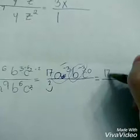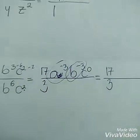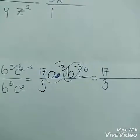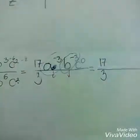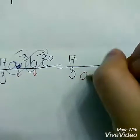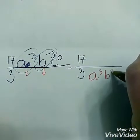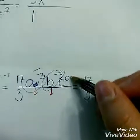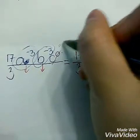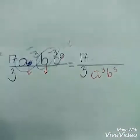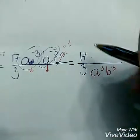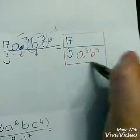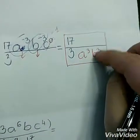I'm going to keep 17 over 3 because we don't do anything with the coefficient. I'm going to move a and b down and make them positive. A to the power of 3, b to the power of 3. C to the 0 is gone — it just equals 1, so we don't need to write it. Your final answer is just 17 over 3, a to the power of 3, b to the power of 3. Everything with positive power.